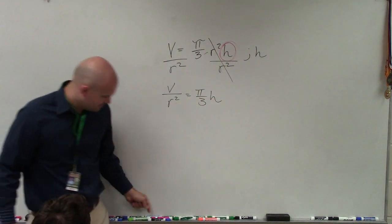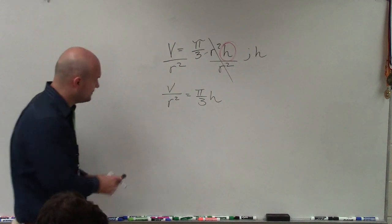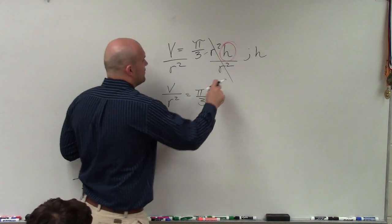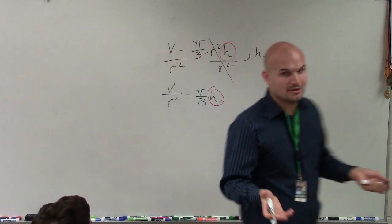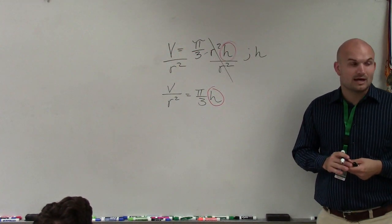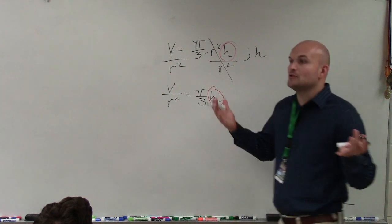Right? Because the h is, you know, and you can go back and circle it again if you like. So now we look at this and say, what is happening to my variable? It's being multiplied by pi over 3, right? So how do we undo multiplying?